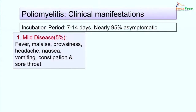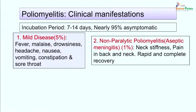The incubation period is about 7 to 14 days, and the response of the body can range from inapparent to mild illness to severe paralytic disease. Nearly 95 percent of cases remain asymptomatic. Five percent develop mild disease presenting with fever, malaise, drowsiness, headache, nausea, vomiting, constipation, and sore throat. In about 1 percent of cases there is nervous system involvement and non-paralytic poliomyelitis, characterized by neck stiffness and pain in the back and neck, with complete and rapid recovery.